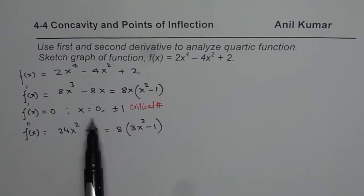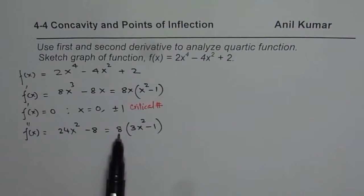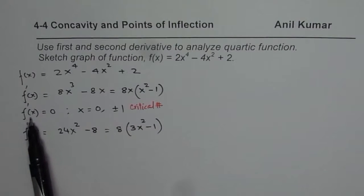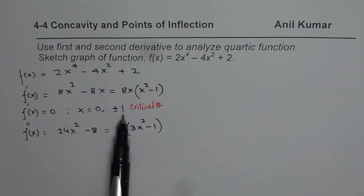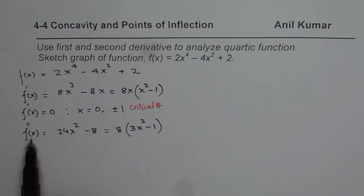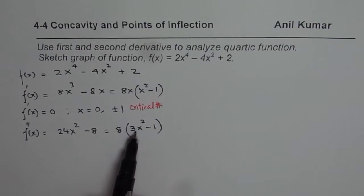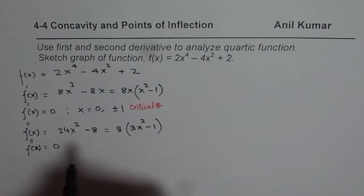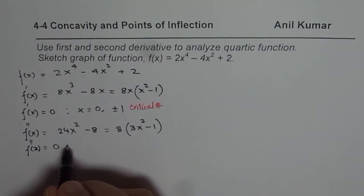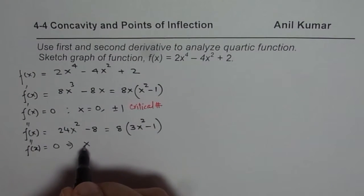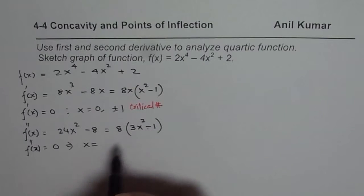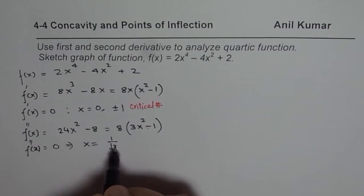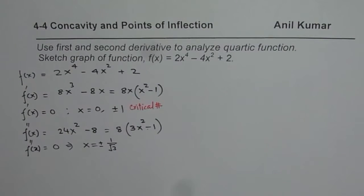We can analyze local maximum and minimum using the first and second derivative test. Using the second derivative equation, let us find the point of inflection. If the second derivative is 0, we could get a point of inflection. Setting 3x² - 1 = 0, we get x = ±1/√3. So we get two points where the second derivative is 0.